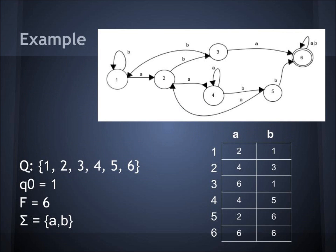Here is an example. The set of states is 1, 2, 3, 4, 5, and 6. The start state is state 1, the accept state is state 6, and the alphabet is AB. Our transition table shows that from state 1 on A you go to state 2, on B you go to state 1, from state 2 on an A you go to state 4, and on a B you go to state 3, and so forth.